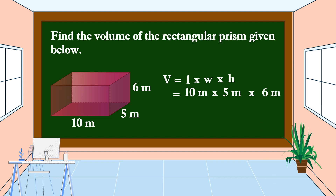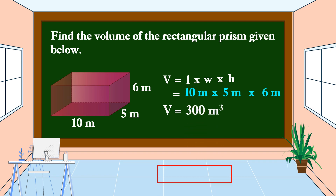Let's multiply: 10 meters times 5 meters is equal to 50 square meters, times 6 meters. The volume is equal to 300 cubic meters. This is the volume of this rectangular prism.